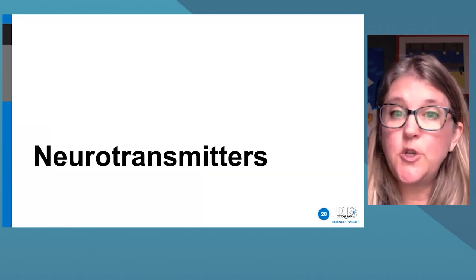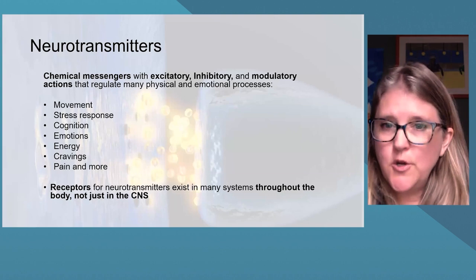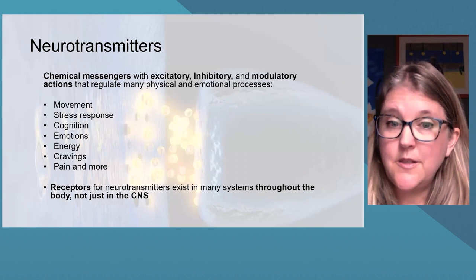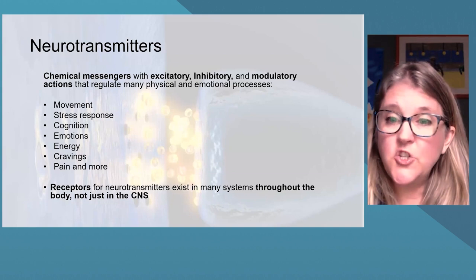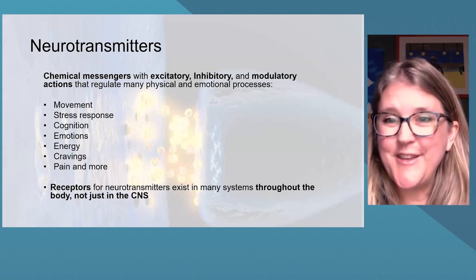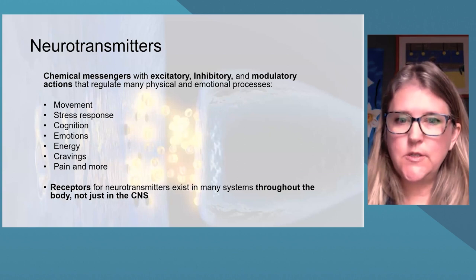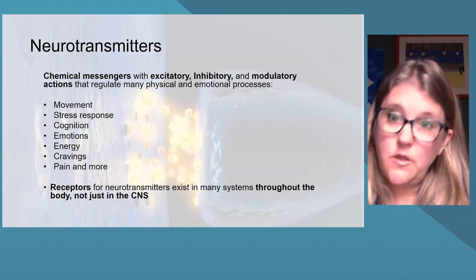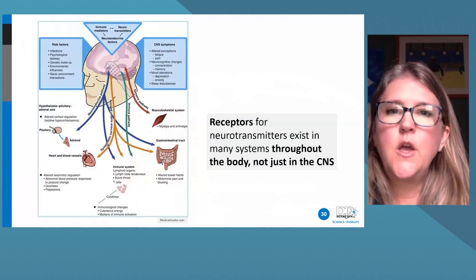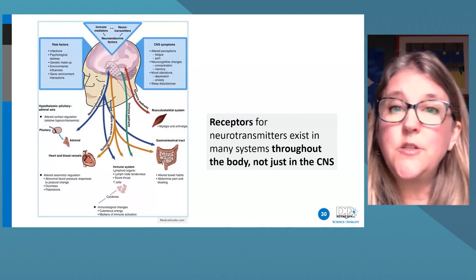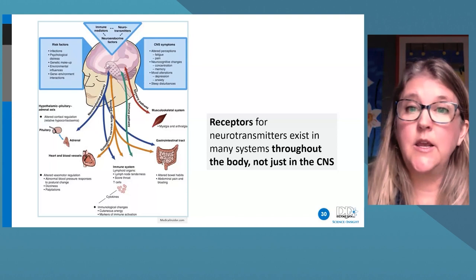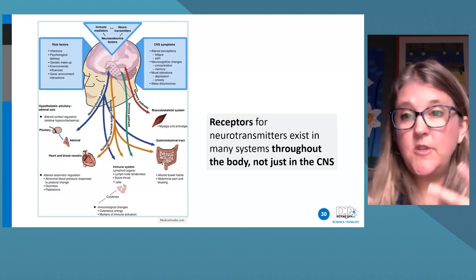The second part of this profile is neurotransmitters. Neurotransmitters are chemical messengers that regulate emotional and physical processes — movement, stress response, pain, cognition. They function in both the central nervous system and the periphery, facilitating communication between the brain and the body's glands, organs, and muscles. The urinary neurotransmitter testing represents whole body secretion, not just CNS secretion, but it corresponds very well with patient symptoms and treatment responses. Receptors for neurotransmitters exist all through the body, not just in the CNS.